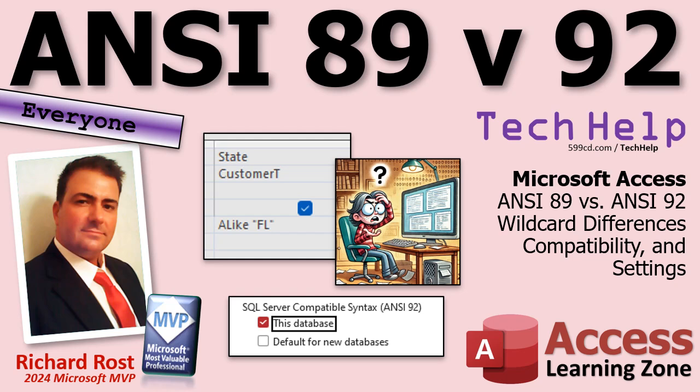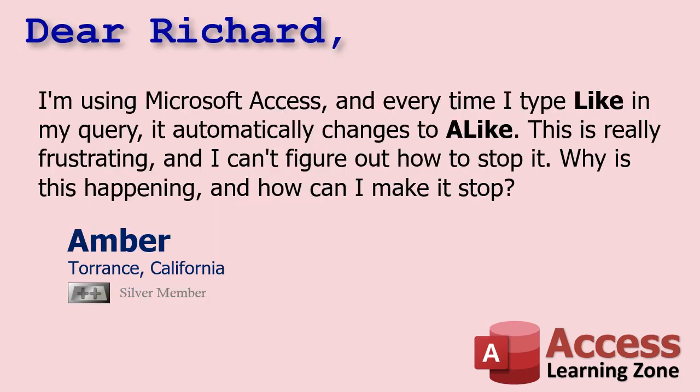It'll be easier once you understand the question. Today's question comes from Amber in Torrance, California, one of my silver members. Amber says: I'm using Access and every time I type LIKE in my query, it automatically changes to ALL LIKE. This confused me the first time I saw it two years back. This is really frustrating — I can't figure out how to stop it. Why is this happening and how can I make it stop?